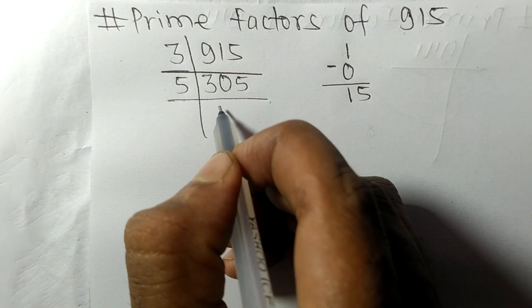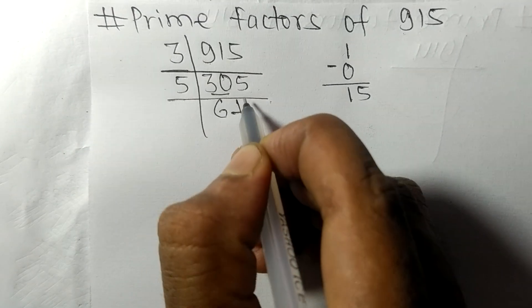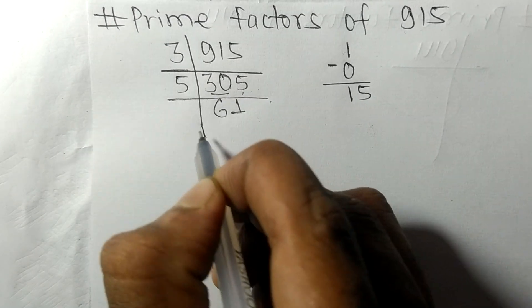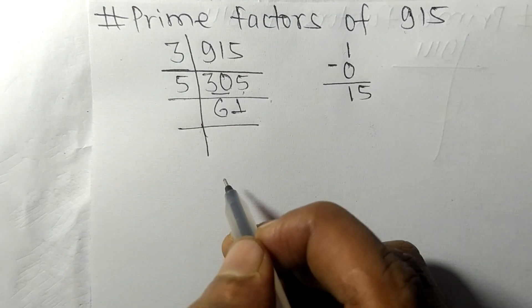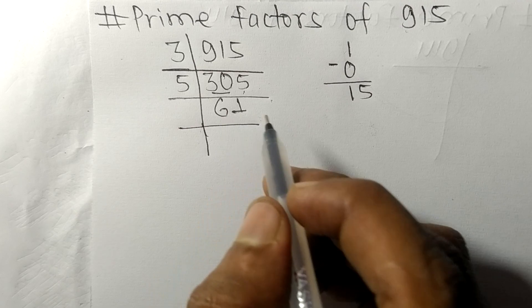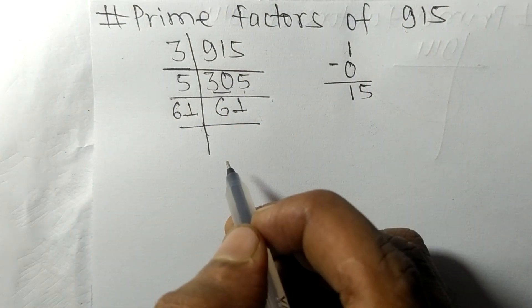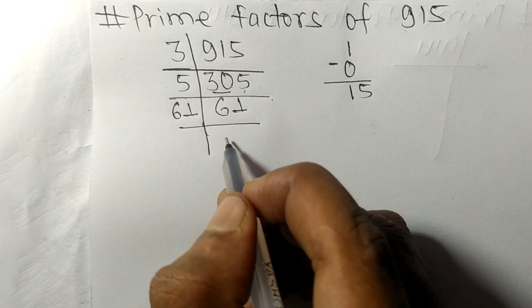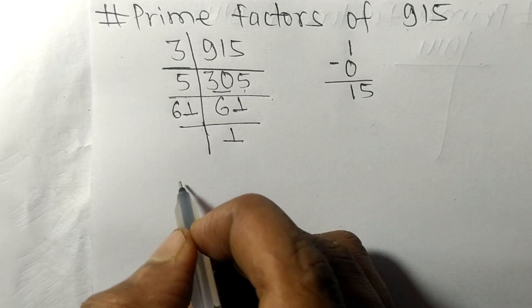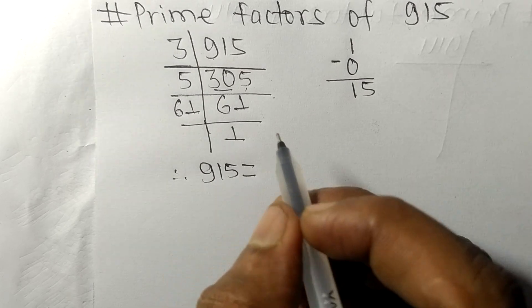5. 5 times 6 is 30, 5 times 1 is 5. So now we got 61 which is our prime number. It is exactly divisible by 61 only, and on dividing we get 1. Therefore 915 is equal to